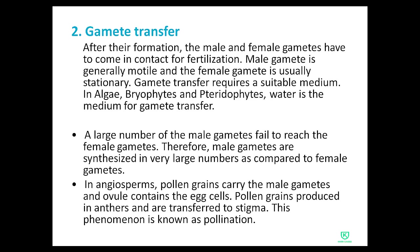In angiosperms, which are flowering plants, pollen grains carry the male gametes and the ovule contains the egg cells. Pollen grains are produced in anthers and are transferred to the stigma.